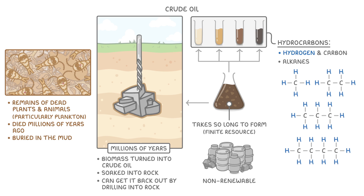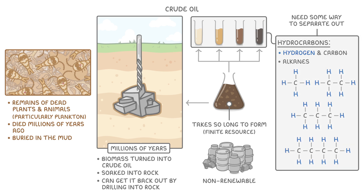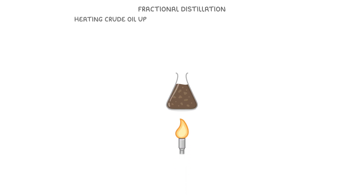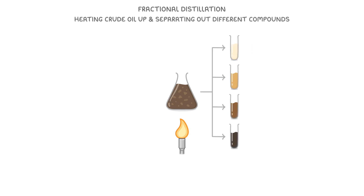Once we've extracted the crude oil from the ground, we need some way to separate out all of the different hydrocarbons in the mixture, because they each have different properties, and so we'll use them for different things. To do this separating, we use a process called fractional distillation, which involves heating the crude oil and separating out different compounds by making use of the fact that the different compounds all have different boiling points.